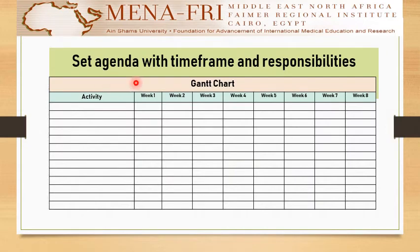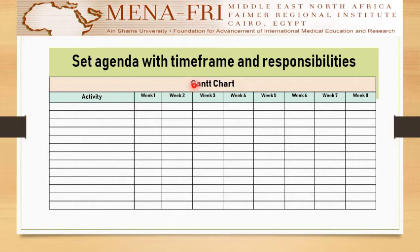You should set an agenda with a time frame and responsibilities. This is called the Gantt chart. You should have a schedule about the activity, its details, and the time of performance of this activity in the first week, second week, third week, along your Mentorship and Learning web experience. So you should have a detailed Gantt chart schedule about the activities.